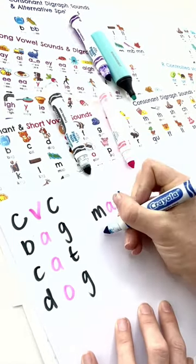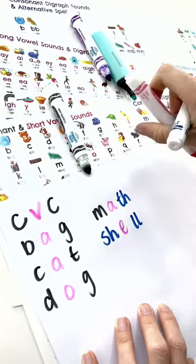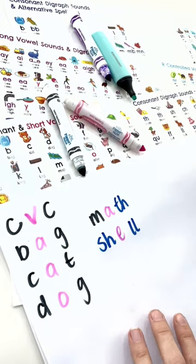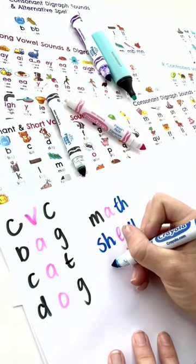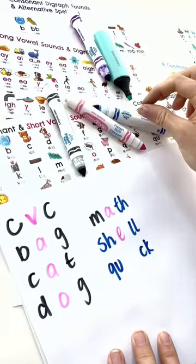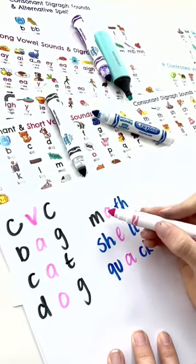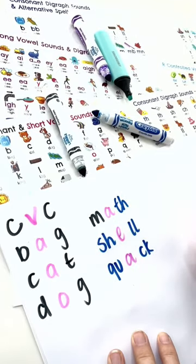We've got shell. So these, despite being five letters, are all CVC. Yeah? CVC words.